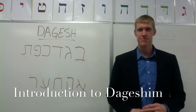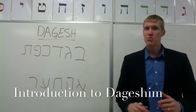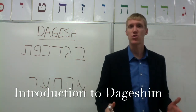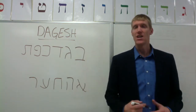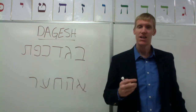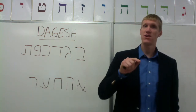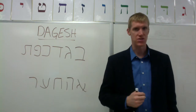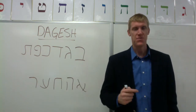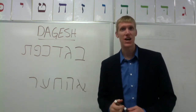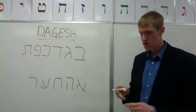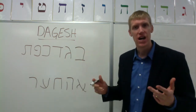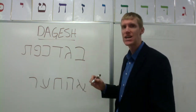Dageshim. The Hebrew word dagesh is basically the word for dot. A dagesh is a dot that goes in certain kinds of letters in certain kinds of situations. There are two kinds of dageshim. First, you have what's called the weak dagesh, or it's called the dagesh lene.